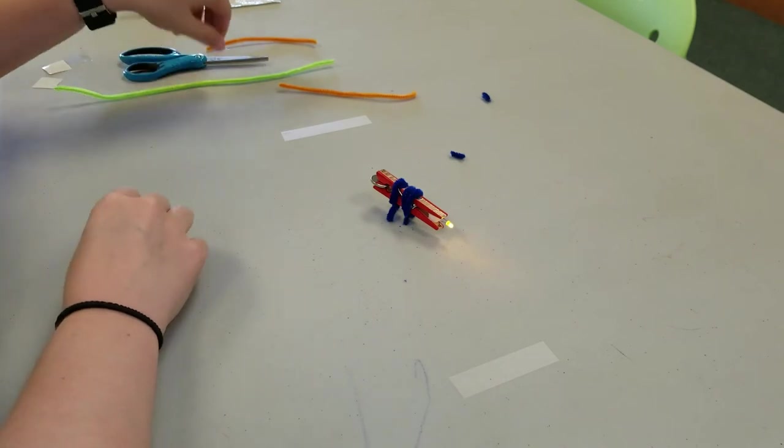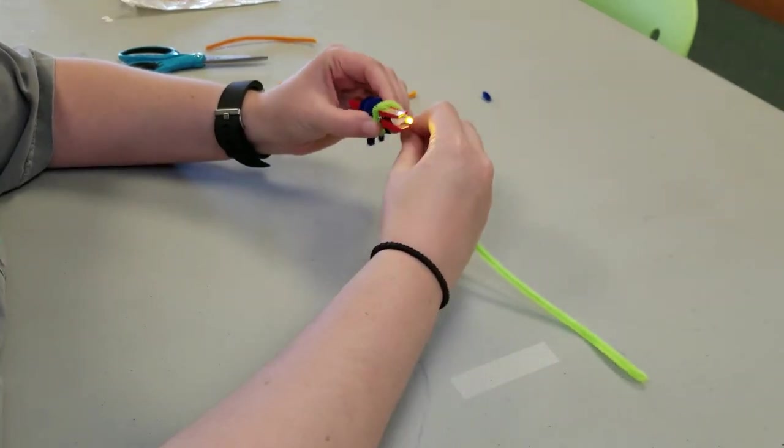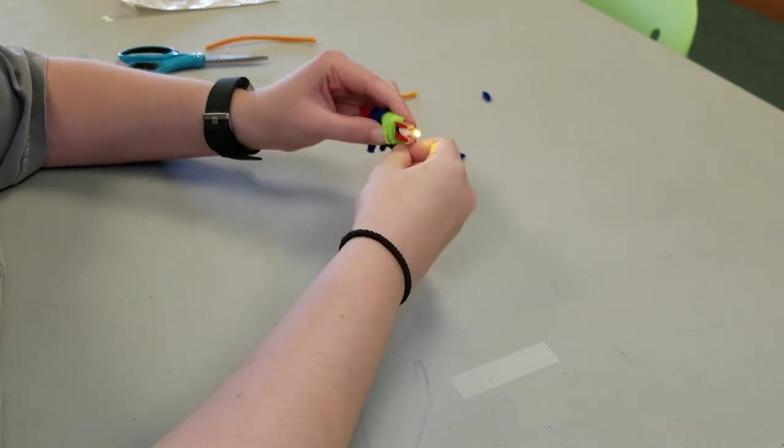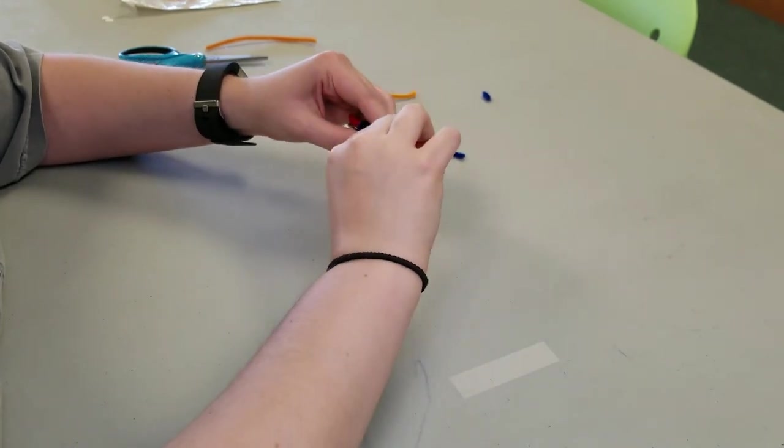Once that's done, we're going to take another pipe cleaner and wrap it around the back end of the clothespin until we get right near the LED light.